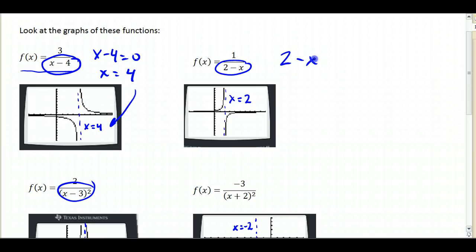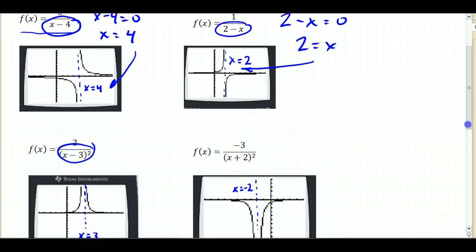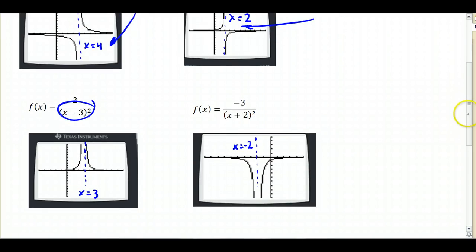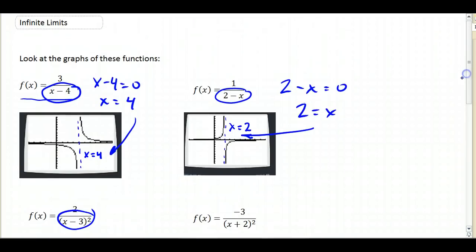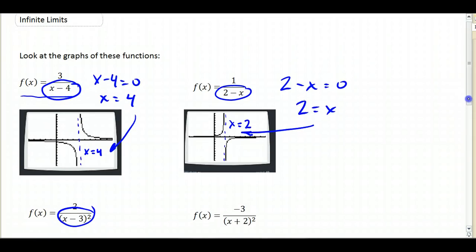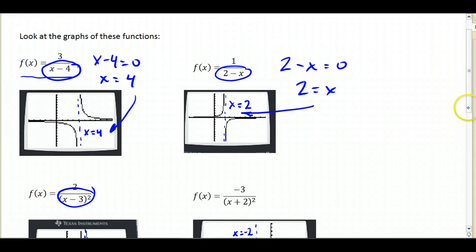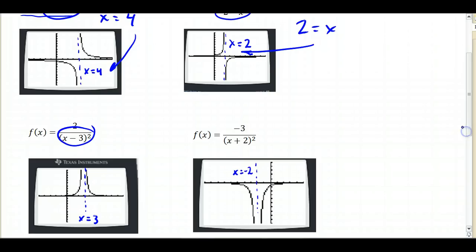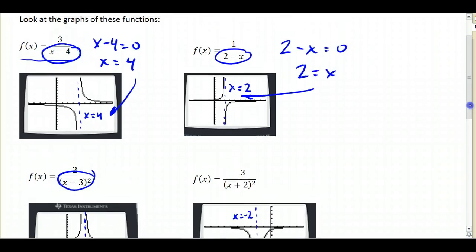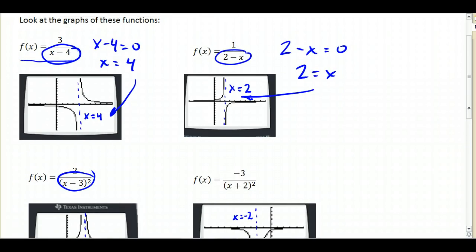Over here, 2 minus x equals 0, that means 2 equals x, which is our vertical asymptote for this one. So what happens with these rational functions is that you never want the denominator to equal 0, and so that is going to tell you what your domain is, and wherever you have an x value that makes the denominator equal to 0, you're going to put a vertical asymptote.